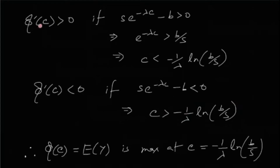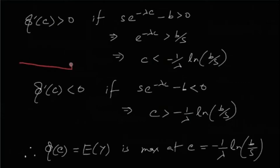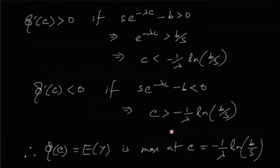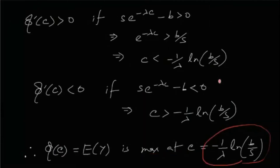Phi prime of C is negative if C is greater than this value. So as we approach this critical point from the left, the function increases; beyond that point, the function decreases. Therefore, Phi has a maximum at C equals minus 1 over lambda times the natural log of B over S.